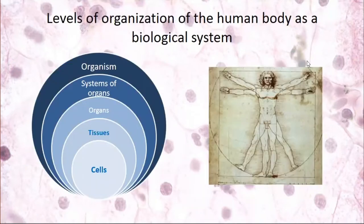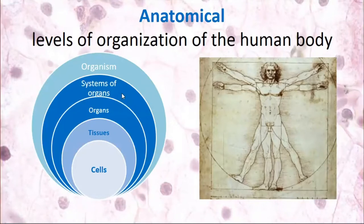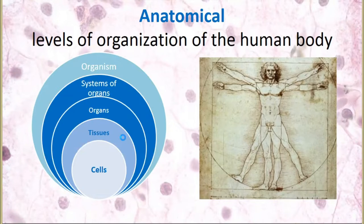There are different levels of organization of the human body as a biological system. Cells form tissues, tissues form organs, organs form systems of organs, and systems of organs form the entire organism. At the anatomy department you study systems of organs and organs; at the histology department you also study tissues and cells which form organs.